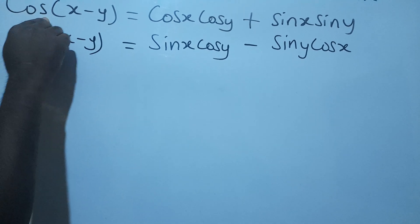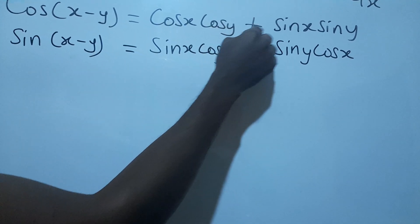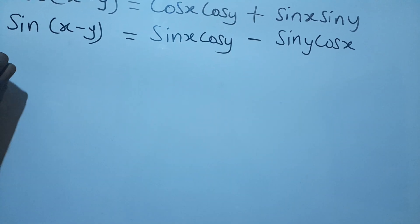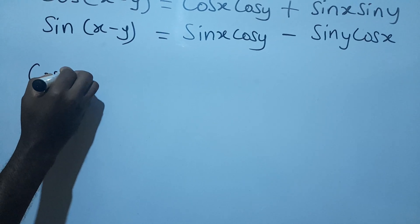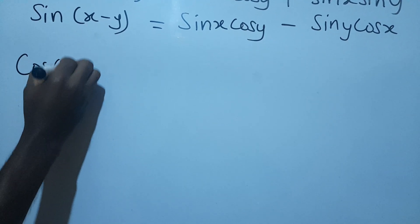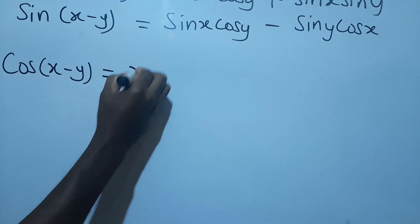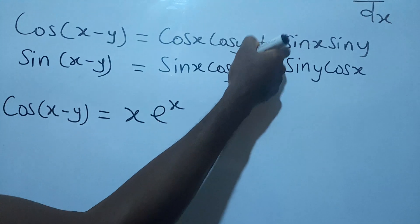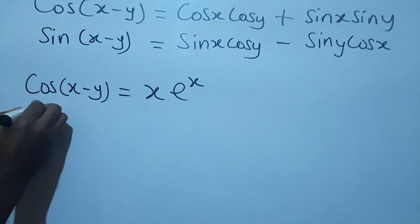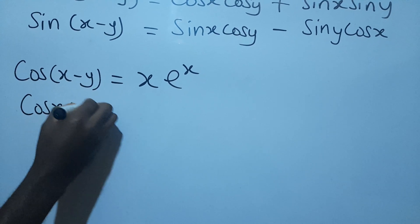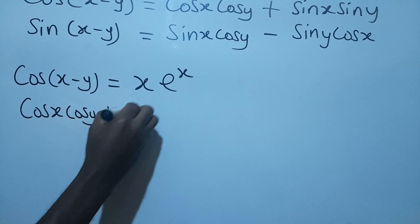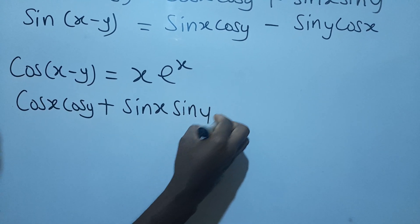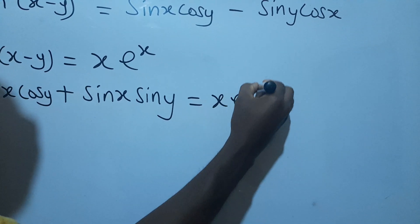Having known that cos(x minus y) is equal to cos x·cos y plus sin x·sin y, and we are asked to differentiate this, we substitute the expansion in place of cos(x minus y). So we have cos x·cos y plus sin x·sin y equal to x·e^x.